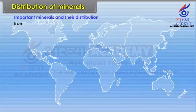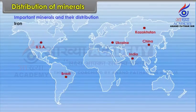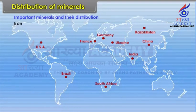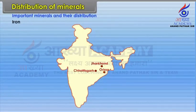Iron is found worldwide in: Ukraine, Kazakhstan, USA, China, India, Brazil, France, Germany, South Africa, etc. In India, it is found in Jharkhand, Orissa, Chhattisgarh and Madhya Pradesh. Copper is used largely in electrical industries because of its quality of electrical conductivity.